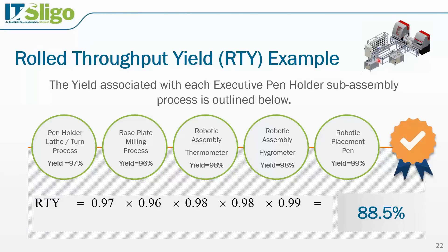Another thing people do with yield is they check only at the end of the line. Let's say in our manufacturing process we put in 100, 99 come out good, and we say our yield is 99%. But what we need to do is take the yield at each individual step — the lathe, the milling process, placing the thermometer, hygrometer, and so on. If we take the yield at each of those steps and multiply them together, we get what's called the roll throughput yield. For example: 0.97 × 0.96 × 0.98 × 0.98 × 0.99 gives a true yield of 88.5%, which gives a much better understanding of your true process quality.